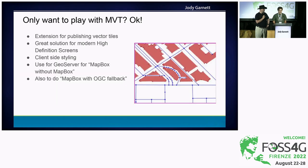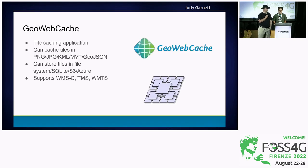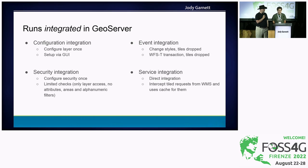If you want to play with Mapbox vector tiles, we have support for them both as input and as output. And along with the vector tiles comes an integrated tile cache, which is GeoWebCache. It supports all the raster tiles but also the vector tiles. You can store stuff on the file system, on the cloud, and so on. It's a pretty good integrated tile cache. It runs integrated with some perks — like if you change the style, it's going to drop the cache for you because it's outdated.